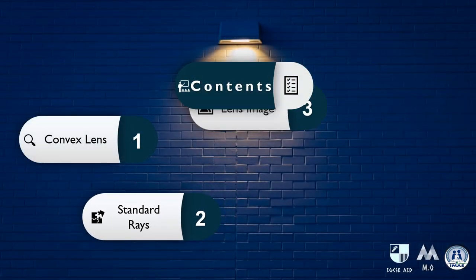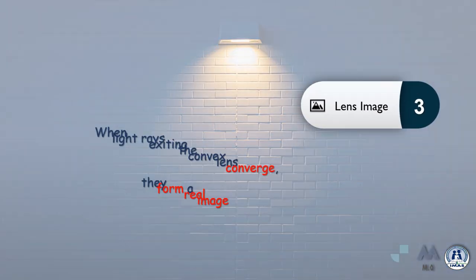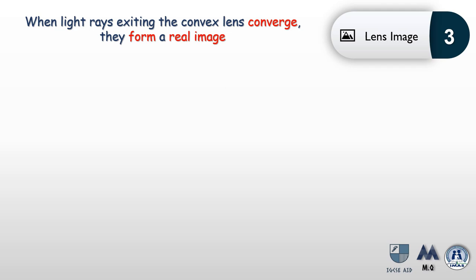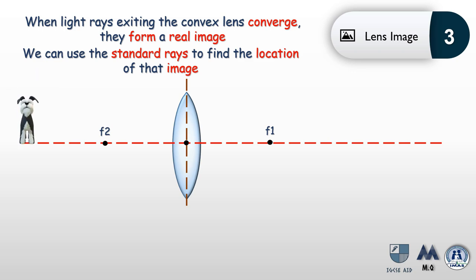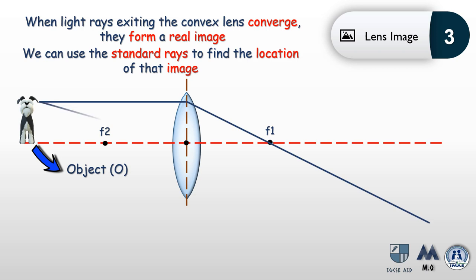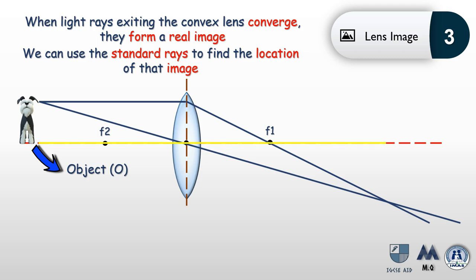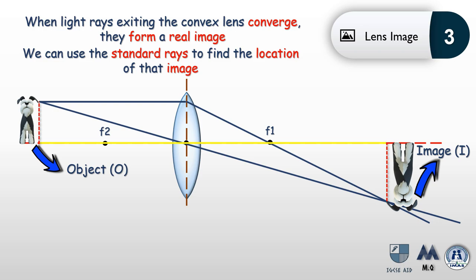Now let's look at how lenses form images. When light rays exit a convex lens they converge, forming a real image. We use standard rays to find the image location. Taking a schnauzer as our object, we draw two standard rays from the top of the dog's ear. We also draw a ray from the dog's feet. The line from the feet to the ear corresponds to the image line — millions of rays emerge from the object, so selecting two points is enough to form the complete image. Notice the image is flipped upside down and magnified.